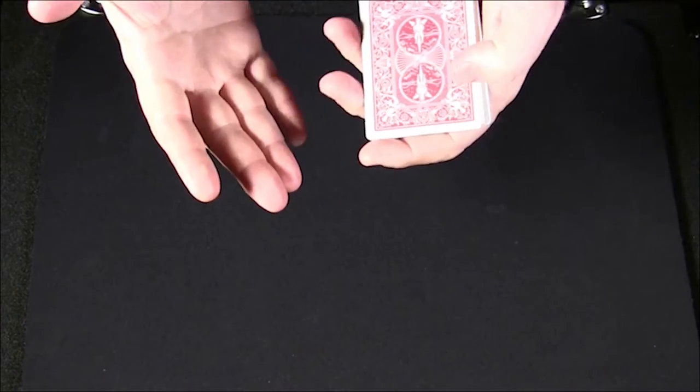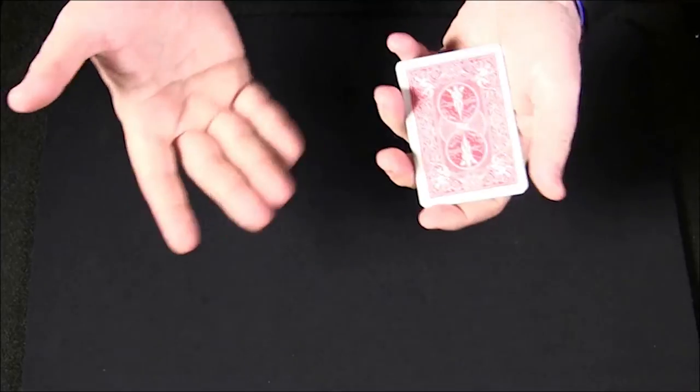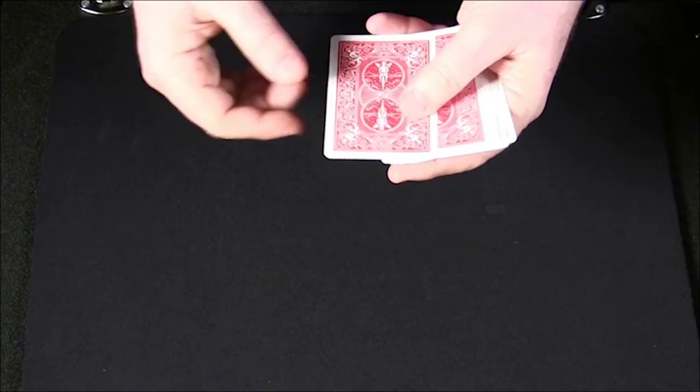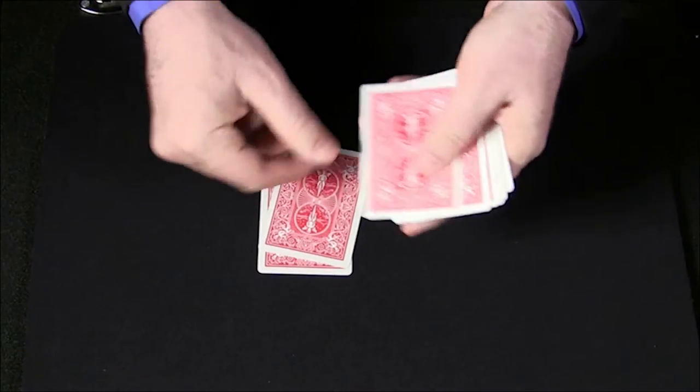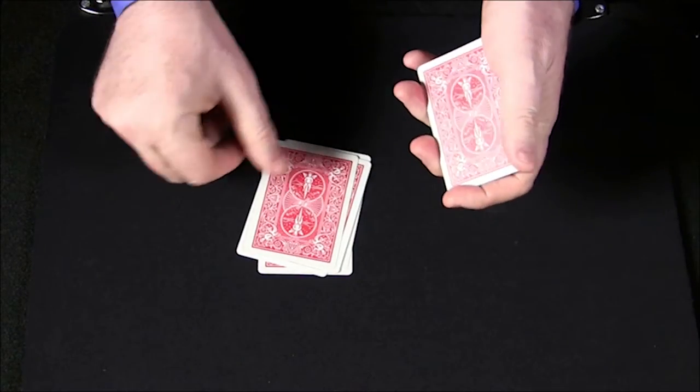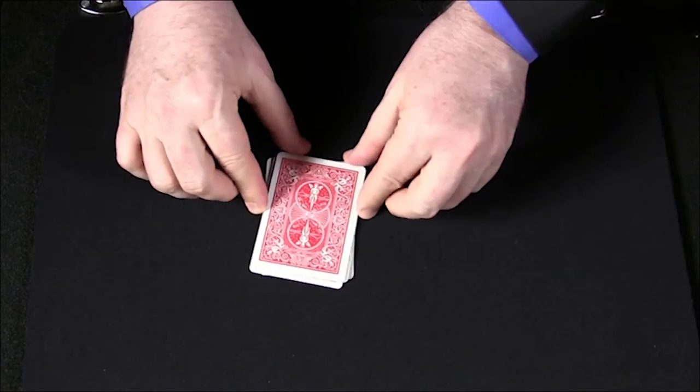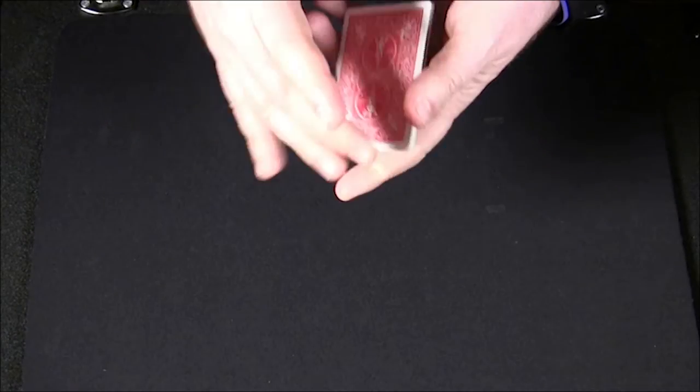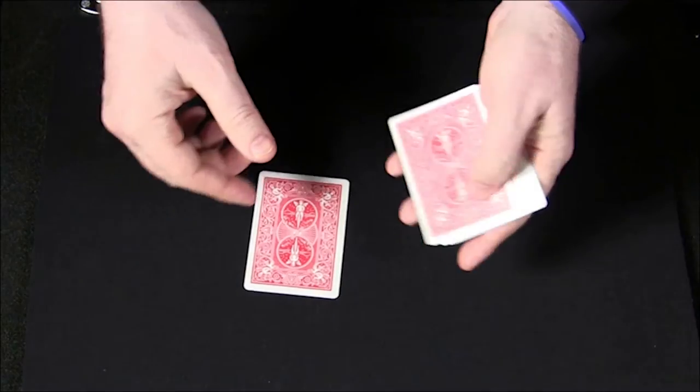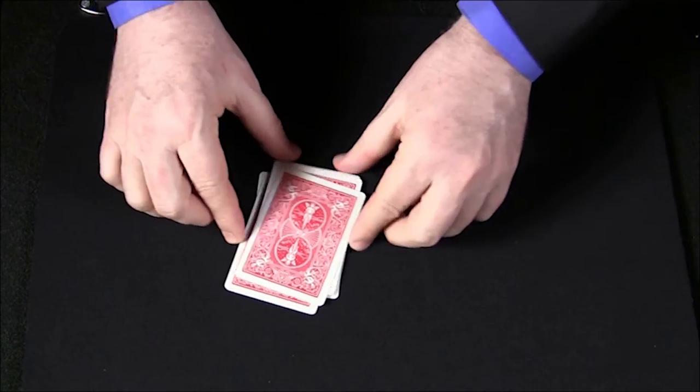Now spell out your card. So in my case, it was the eight, one card for each letter, E I G H T. You're going to take the rest cards, place them on top. Now eight of, so you'll do of, O F, the rest on top.